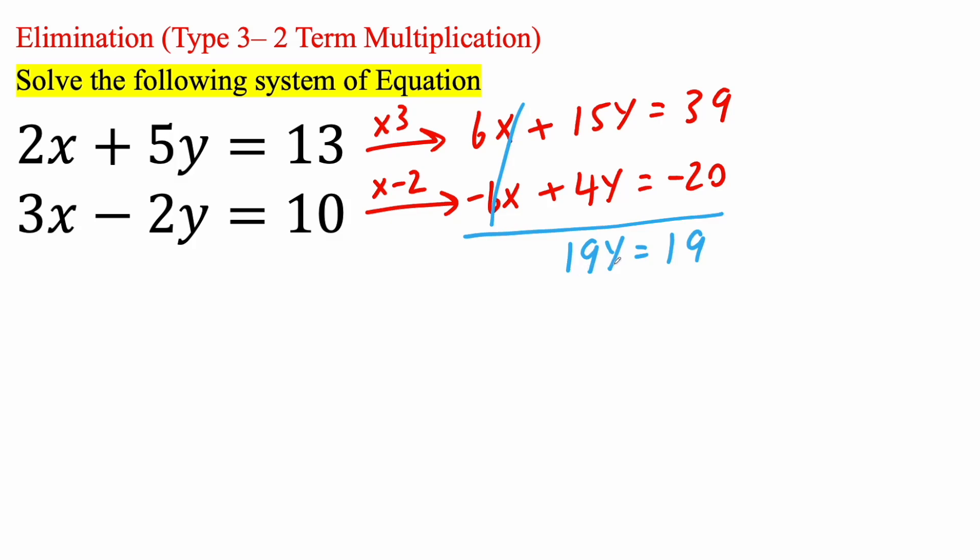Now, this is saying 19 times y. So, the opposite of multiplication is division. So, I'm going to divide by 19, divide by 19, and so y is going to equal 1. And we can box in this answer.